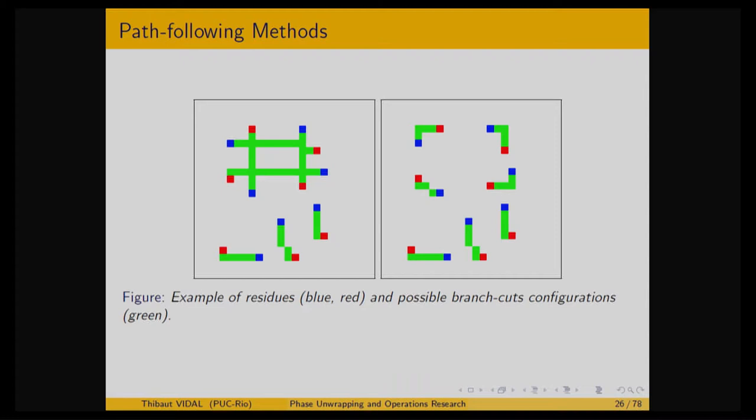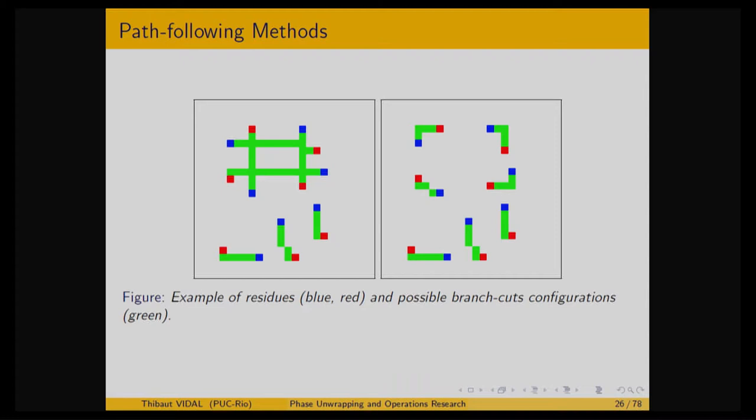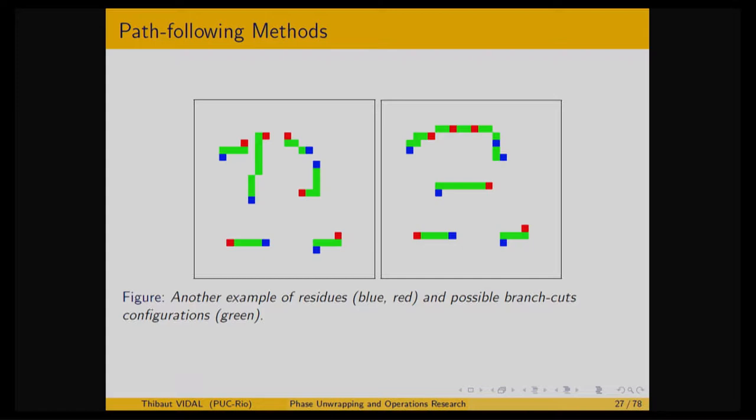The idea is to use a path-following method: integrate the signal along a path, but first create barriers to prohibit the path from passing between residues where a spurious 2 pi discontinuity would result. One possible solution connects red and blue residues with green lines — the signal will never produce a fake drop. A better approach uses a matching problem. Even better, you can create trees containing an equal number of positive and negative residues, guaranteeing the same result regardless of integration path.